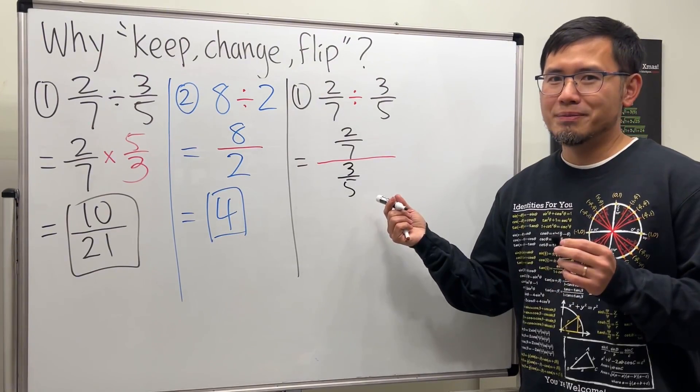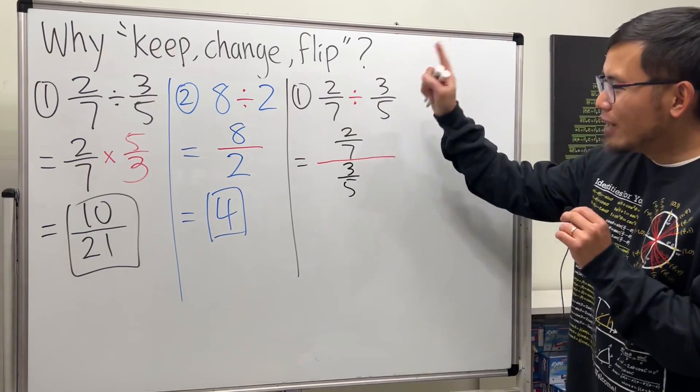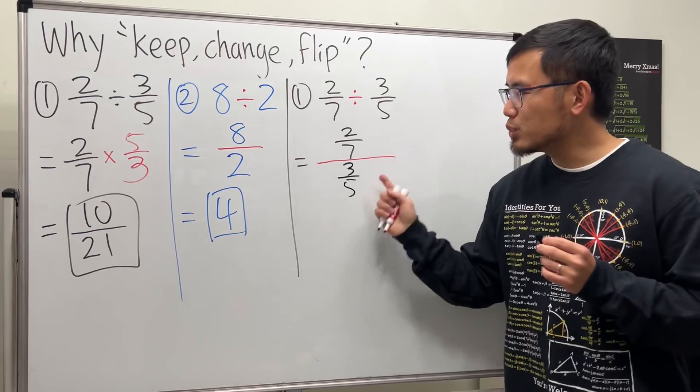I know I just made this worse, right? I did. Because this is called complex fraction. We have one little fraction, two little fractions, instead of a big one. But it's okay. Because we can fix this.